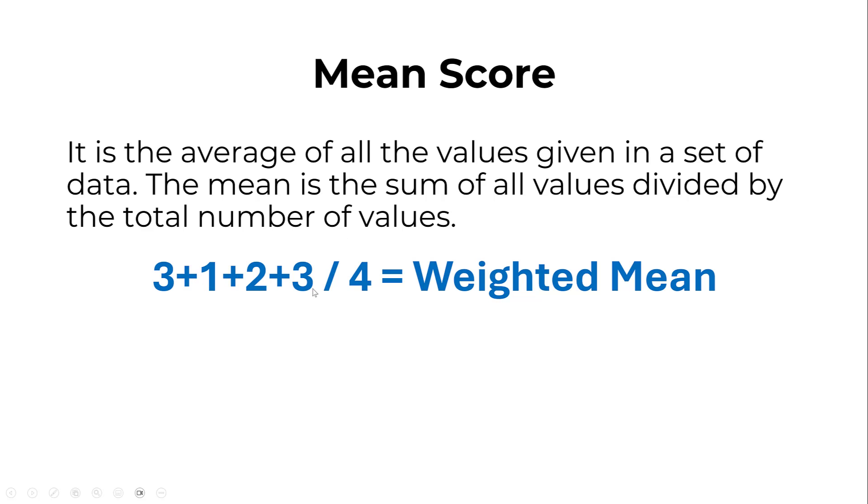Suppose we have some statements and we need to compute their mean score. We have the first one coded as three corresponding to often or always, the second one coded as one, the third one coded as two, and the fourth one coded as three. We sum all of these, group them together, and divide by the number of instances - one, two, three, four. We divide by four and get the weighted mean score.